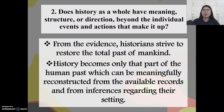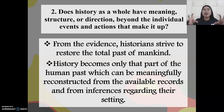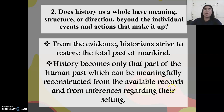Does history as a whole have meaning, structure, or direction beyond the individual events and actions that make it up? From the evidence, historians strive to restore the total past of mankind. History as a whole has meaning. Beyond the individual events or actions that make it up, history becomes only the part of a human past which can be meaningfully reconstructed from the available records and inferences regarding their setting. These historians will try to gather as much authentic data as possible. Those individual actions, if compiled and combined with different series of historical writings and authentic evidence, the historians could come up with a very reliable source of information.